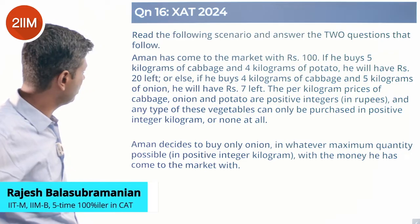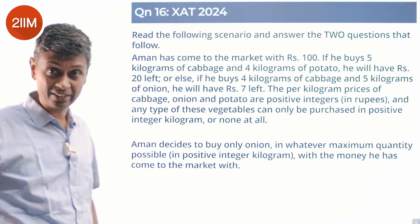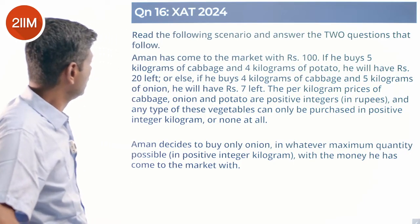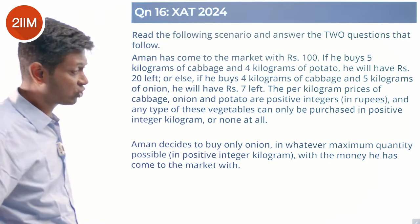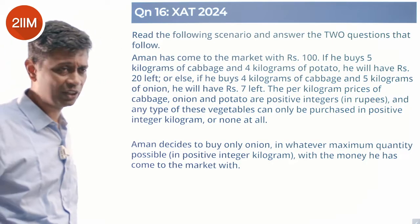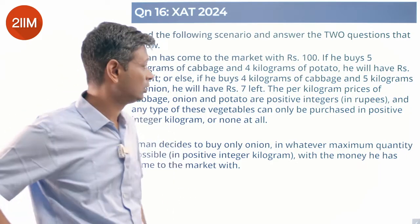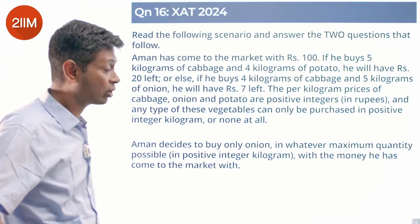Aman has come to the market with rupees 100. If he buys 5 kilograms of cabbage and 4 kilograms of potato, he'll have rupees 20 left. Or else, if he buys 4 kilograms of cabbage and 5 kilograms of onion, he'll have rupees 7 left. The per kilogram prices of cabbage, onion, and potato are positive integers in rupees. And any type of these vegetables can only be purchased in positive integer kilogram or none at all.